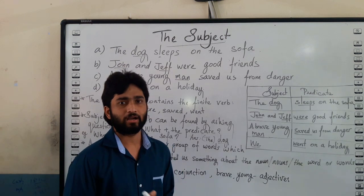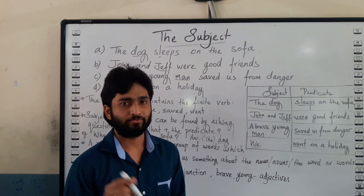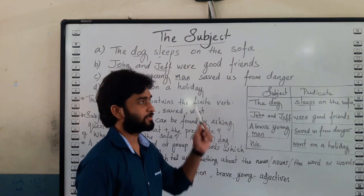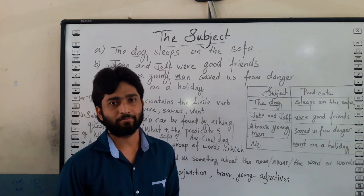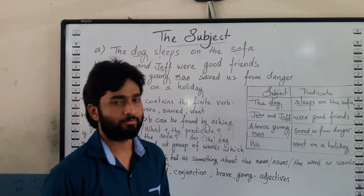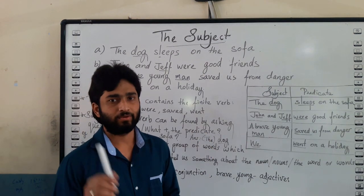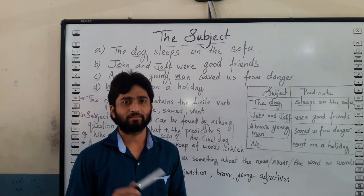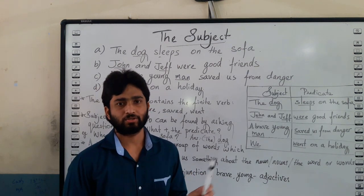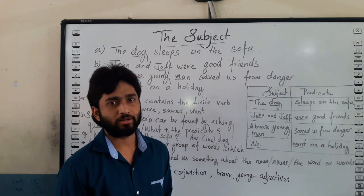That is with regard to the finite verb. After this, let's move to sentences and from those sentences we can find the subject. We know that sentences have two parts — one part is known as the subject and the rest of the part is known as the predicate.